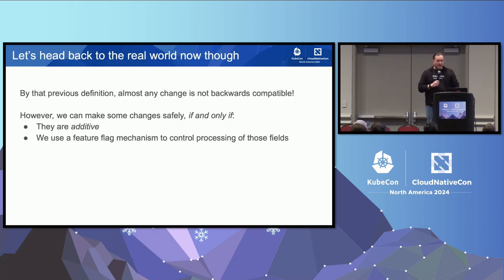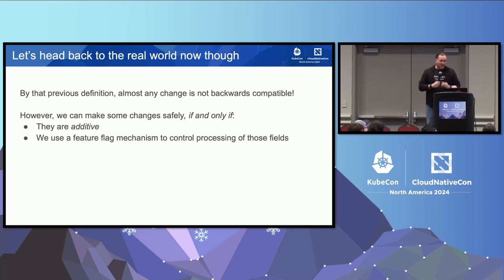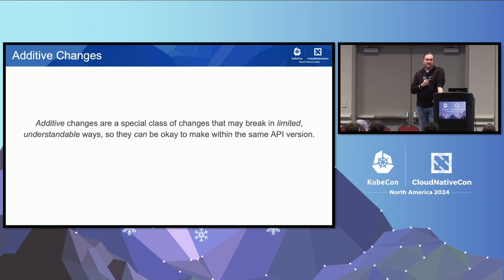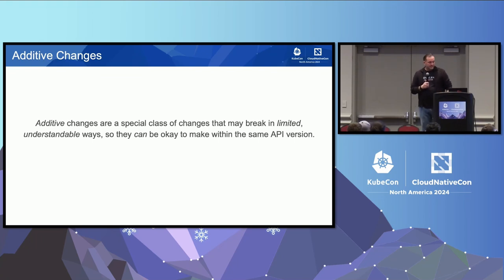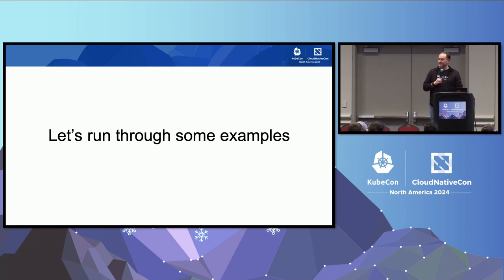You can make safe changes if they are additive and you have some feature flag mechanism for controllers to know they should be doing something different. Additive changes are a special class of changes that will break in limited and understandable ways — for example, you add a field, and if you roll back, the field is lost and that behavior stops working. If you add a new thing and then roll back the versions and that behavior stops working, that's kind of expected — you lost access to the feature. Let me try to make that clearer with some examples.